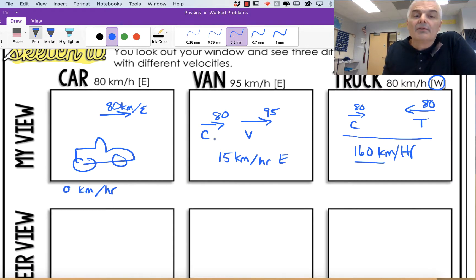So that's your view of the truck. My view of the van is I think he's going 15 kilometers per hour to the east, because he's going 15 kilometers per hour more than me. From my perspective, the truck is traveling at 160, and from my perspective in the car, it's traveling at zero.